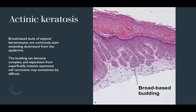Actinic keratoses can also have broad-based budding, with bulbous budding islands extending downward from the epidermis. Depending on how much basophilic staining they take up, they could be confused for a superficial basal cell carcinoma. Doing a BerEP4 stain to confirm it's negative can really increase your confidence that it's just an actinic keratosis. The budding can become complex, making it difficult to separate from superficially invasive carcinoma, especially with tangential sectioning.